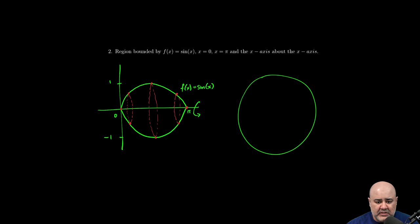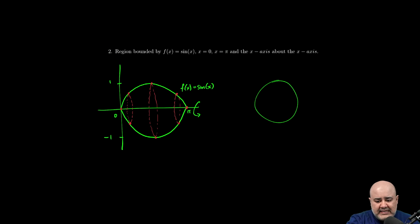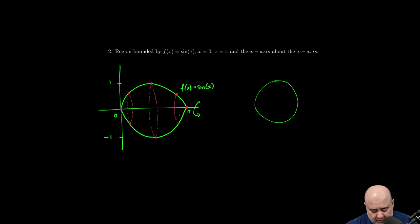Then we need to draw a representative slice. It's going to be a circle. Because we're slicing perpendicular to the x-axis, the radius is going to be a vertical distance. So the radius of any of these representative slices will be the distance from the x-axis to whatever the height of the function is.